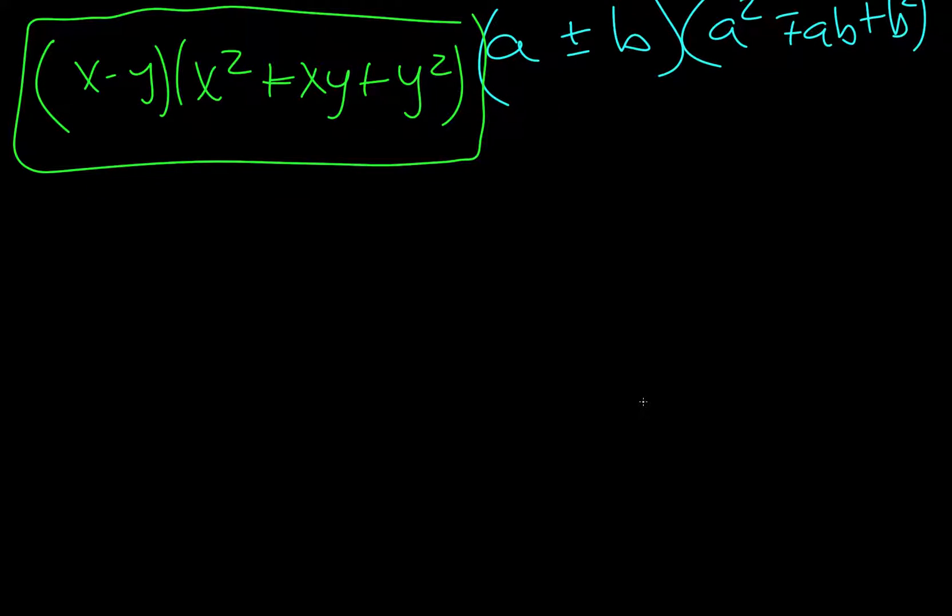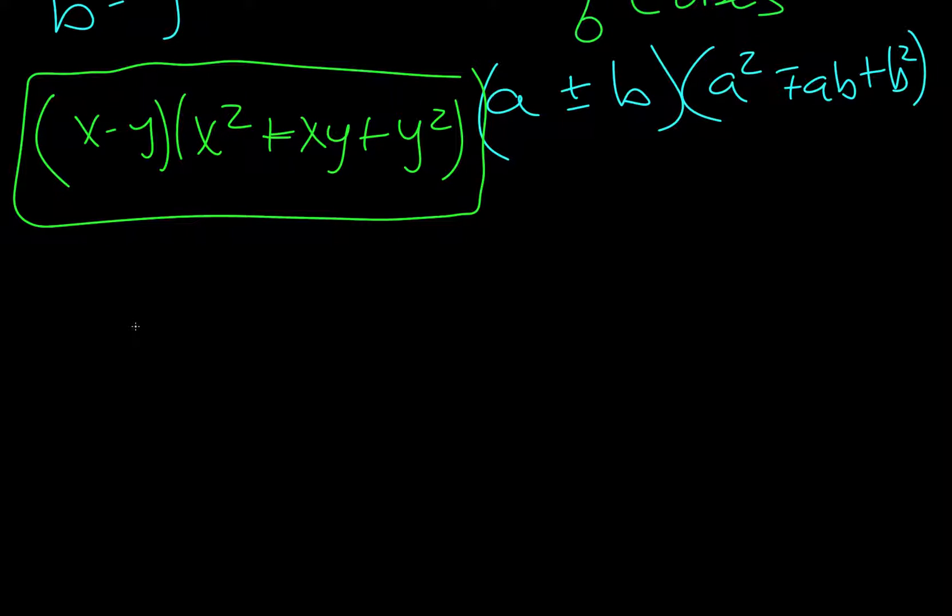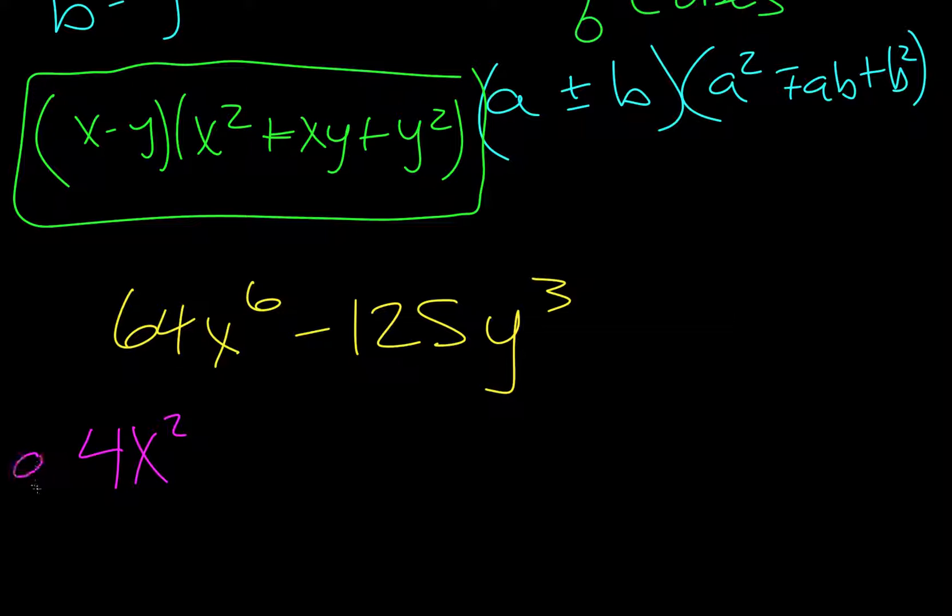So let's do 64x to the 6 minus 125y cubed. So the first thing we want to do is determine our a and our b. So what times what times what would make 64? Well, that's going to be 4. We could raise 64 to the 1 third on a calculator, and that would help us determine that as well. Now x squared times x squared times x squared, because if we added 2 plus 2 plus 2, it would make this 6, and so x squared is a part of our a. Now b is going to be 5y, because 5 times 5 times 5 is 125, and y times y times y is y cubed.